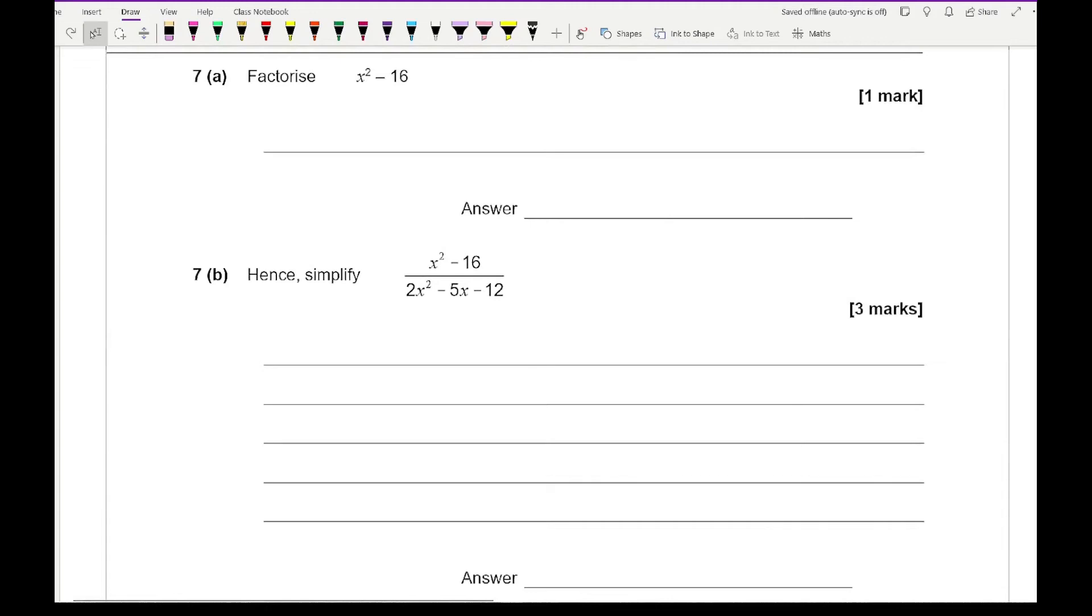Moving on to question 7, all we've got to do is factorise. You should be able to spot that this is a difference of two squares. What do you have to square to get X squared? X. What do you have to square to get 16? That's 4. One's a plus, one's a minus. It doesn't really matter what order you put those two brackets. For question 7B it says hence simplify. We've got to notice that this numerator is our part in part A.